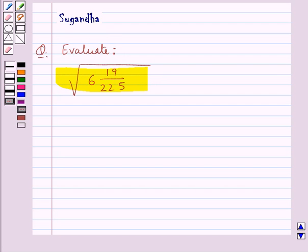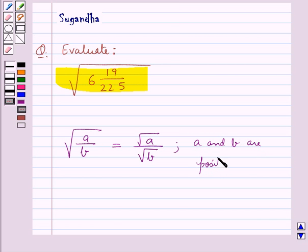Before moving on to the solution, let's recall that the square root of a/b, where a and b are positive numbers, is equal to the square root of a over the square root of b. This is the key idea that we use in this question.